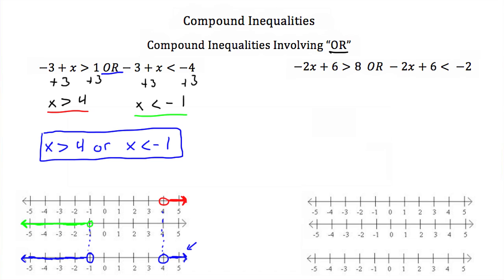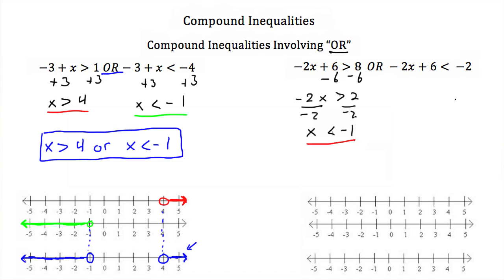Let's try this again. Here we have negative 2x plus 6 has to be greater than 8, or negative 2x plus 6 has to be less than negative 2. We're going to solve these individually. Taking the left-hand side first, we subtract 6 from both sides and get negative 2x has to be greater than 2. Divide both sides by negative 2, and we get x has to be less than negative 1. I switched my inequality sign because I divided by a negative number. So our first solution set is x has to be less than negative 1.